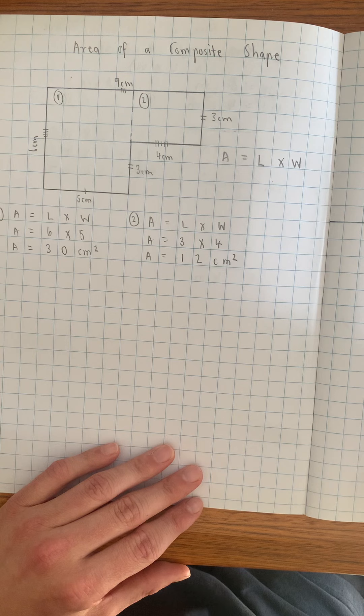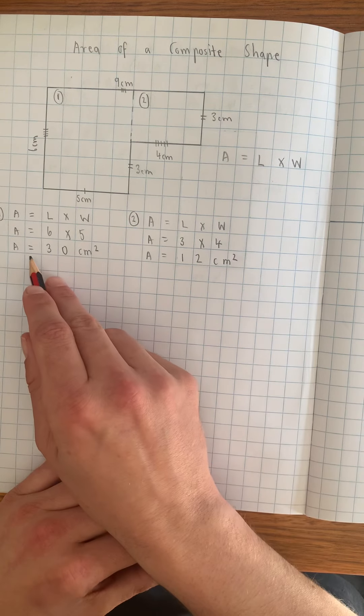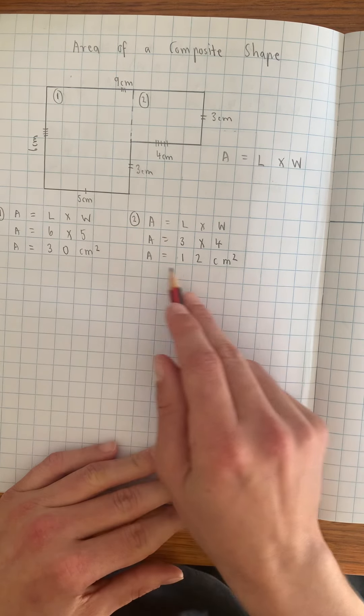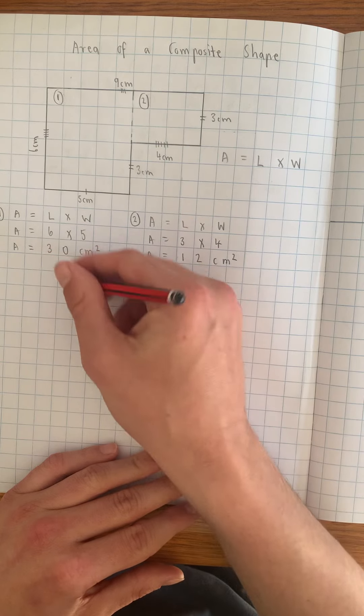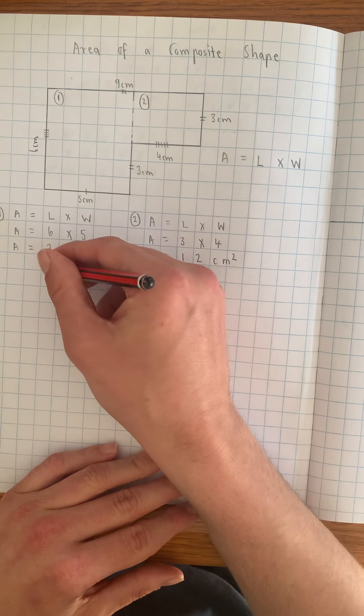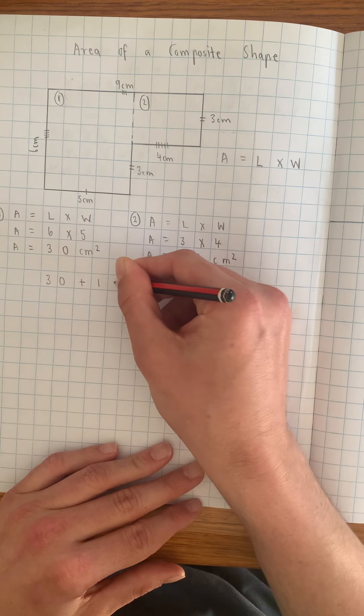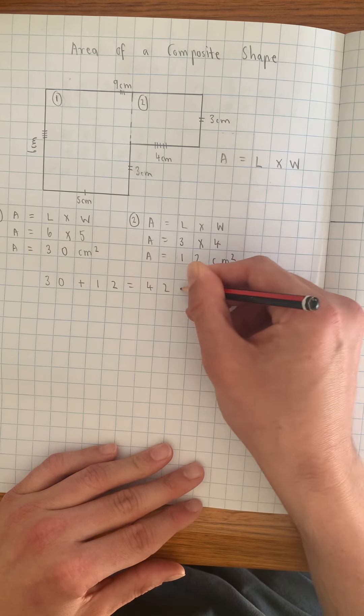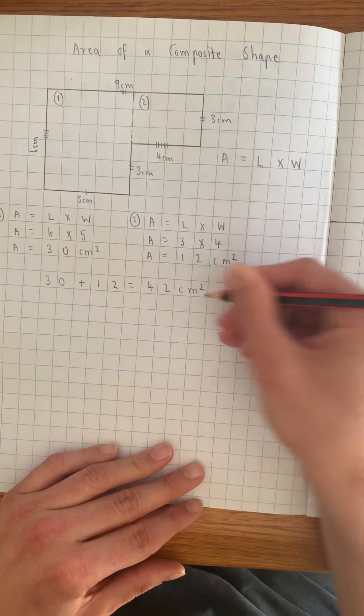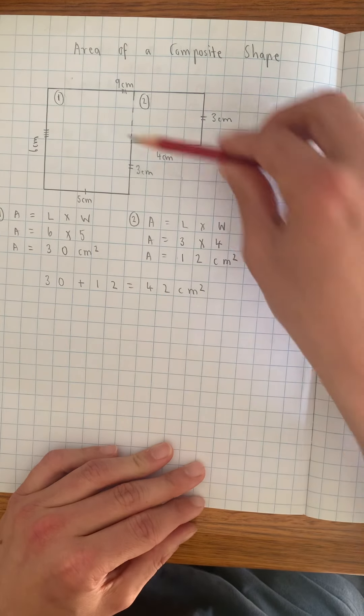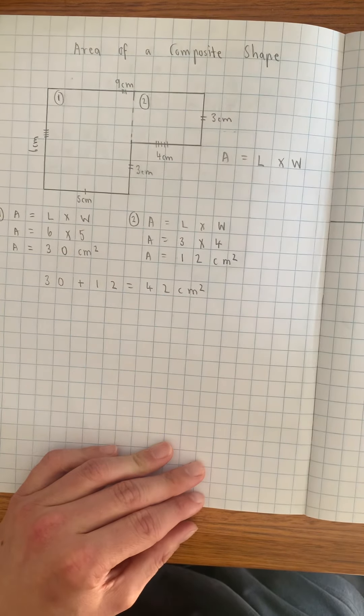Now, the third step is I need to add the area of shape one with the area of shape two. So it's a simple addition. So 30 plus 12 equals 42 centimeters squared. So that means the total area is 42 centimeters squared.